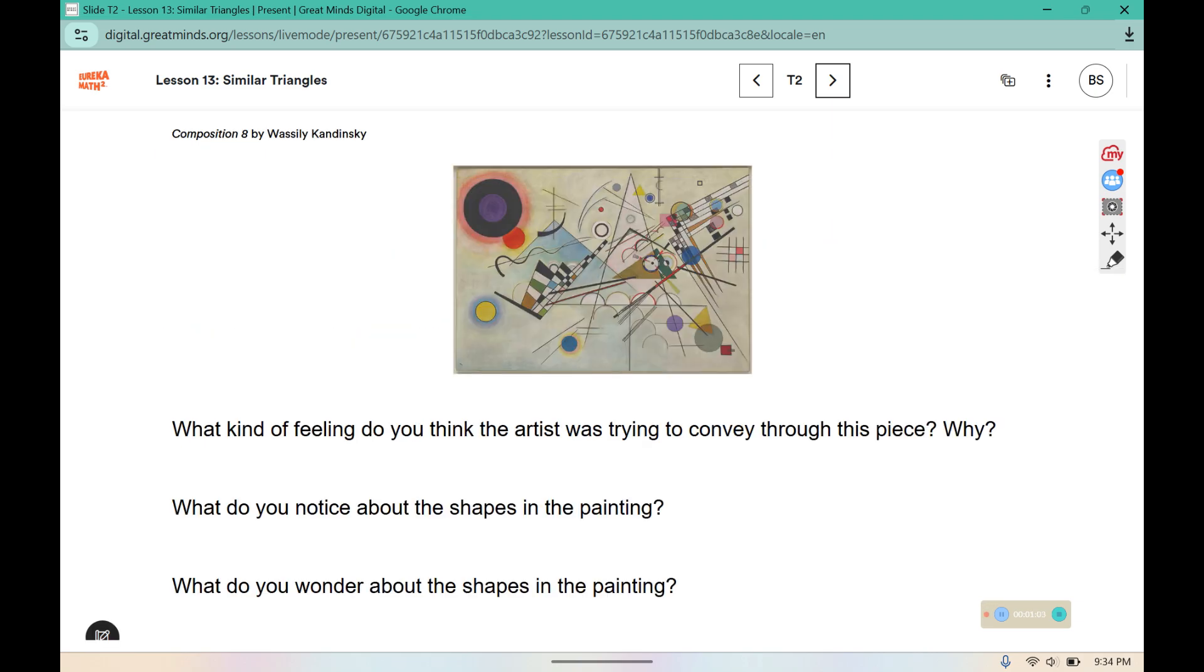Here we have a picture of a painting by this artist. What kind of feeling do you think the artist was trying to convey through this piece? Why? You can see that the artist used a lot of color, so they could be conveying feelings of happiness or joy. There's also a lot of different elements like thin lines and thick lines and different shapes. You can see this wavy line gets thicker as it goes down. So they may be trying to evoke feelings of change or maybe busyness with all of the shapes.